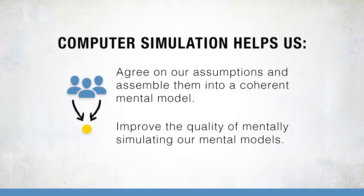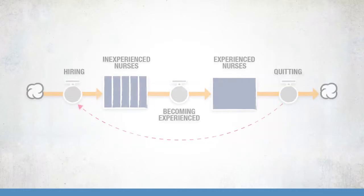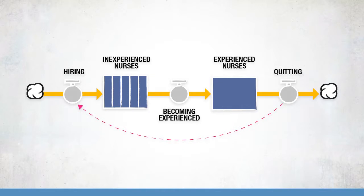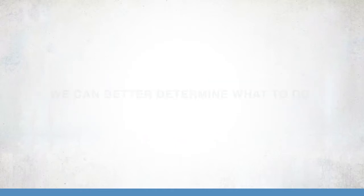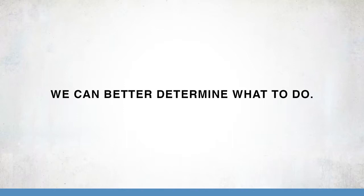Computer simulation can help us: one, agree on our assumptions and assemble them into a coherent mental model; and two, improve the quality of mentally simulating our mental models. By adding systems thinking, we can improve the quality of our mental models even more, because reality is filled with many complex dynamics. There are time delays. We need to expand our boundaries of analysis. There can be unintended consequences that ripple out from our actions. There can be feedback loops interacting in ways that we don't fully understand, with vicious cycles or virtuous cycles possibly at play. In this example, when quitting jumps, hiring reacts immediately. But because of the delay, it takes a while before the increased hiring reaches the experienced.